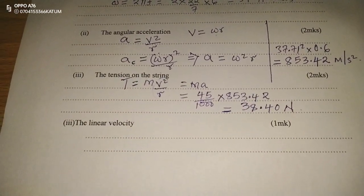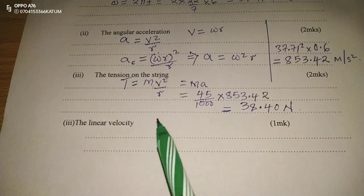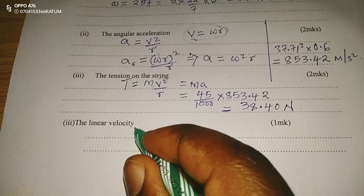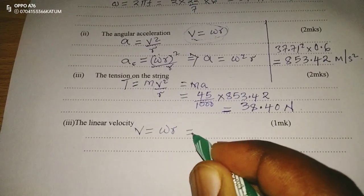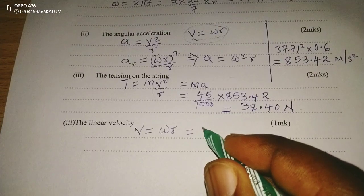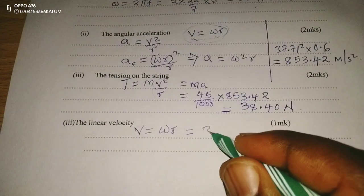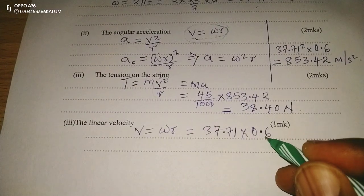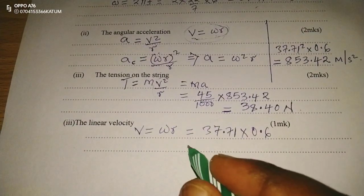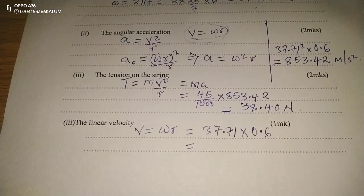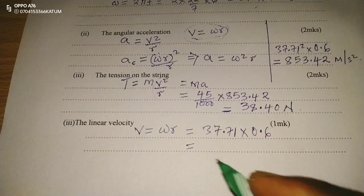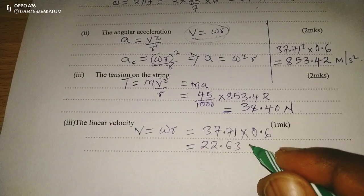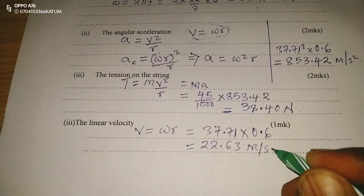Finally, calculate the linear velocity. Since v equals omega r, we apply that formula: omega is 37.71, multiplied by radius 0.6 meters (60 centimeters converted to SI units). This gives us 22.63 meters per second.